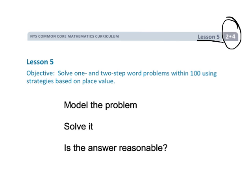This is second grade module 4 lesson 5. We're going to be using tape diagrams largely to solve word problems. It's a three-step process. Step one is to model the problem — the point is to help students understand what the problem is about and what it's asking them to do, rather than the traditional approach where students just look at the numbers and arbitrarily add, subtract, or multiply them.